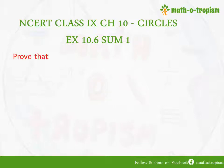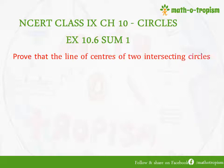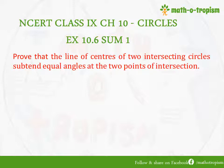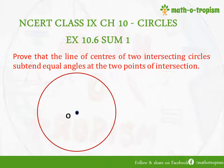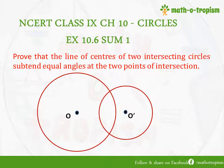Prove that the line of centers of two intersecting circles subtends equal angles at the two points of intersection. We will draw two intersecting circles with centers O and O', and let us assume that the points of intersection are A and B.